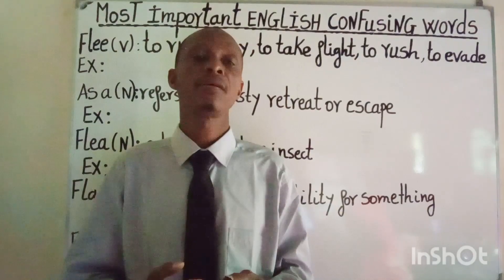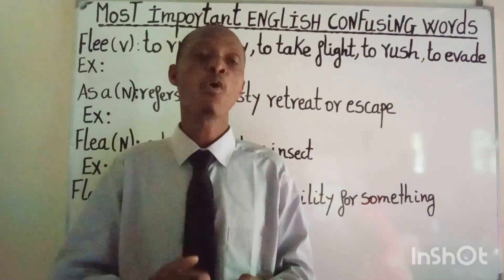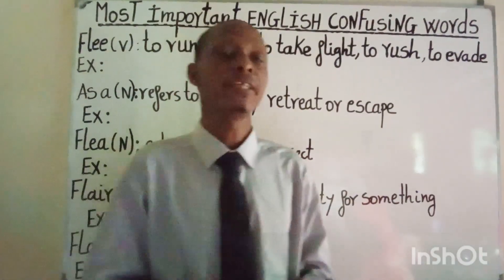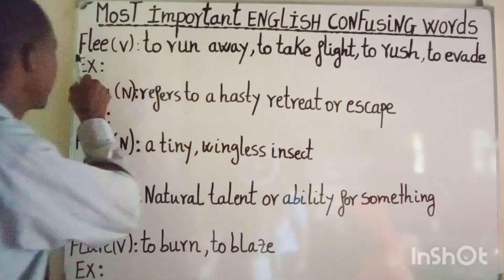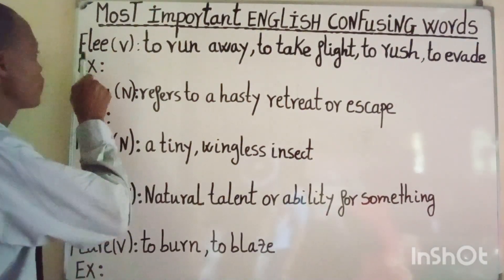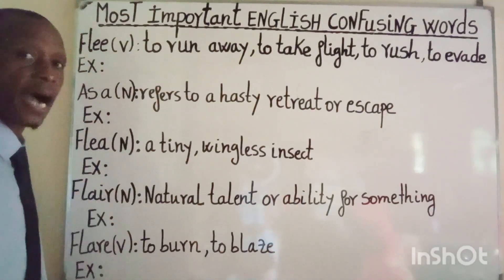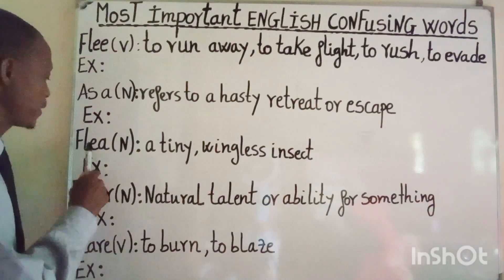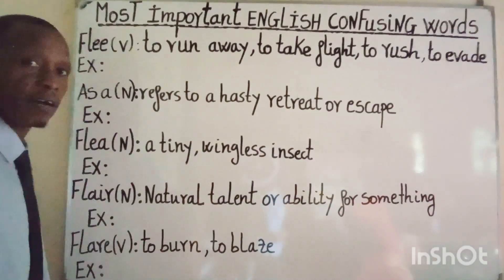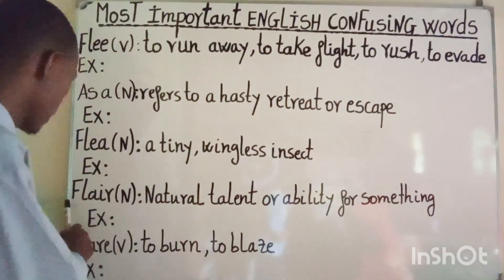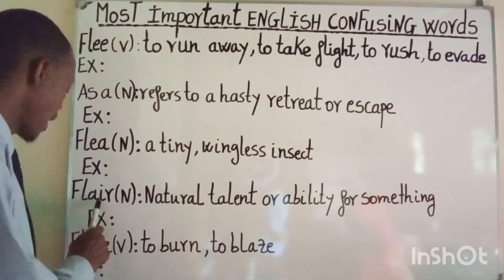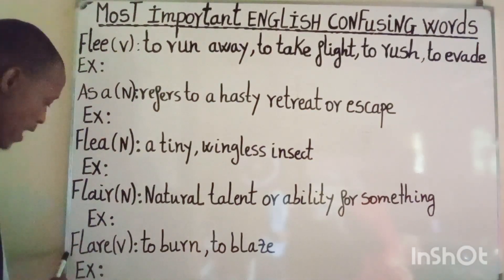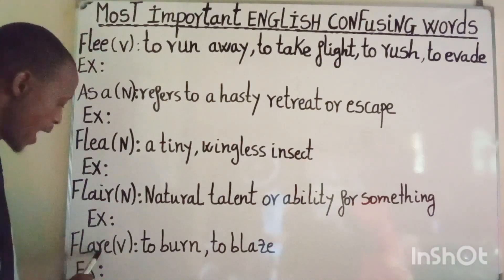In this lesson, I'm going to talk about the most important English confusing words, especially the word 'flee' when spelled as F-L-E-E, and 'flea' when spelled as F-L-E-A, as well as 'flair' when spelled as F-L-A-I-R, and 'flare' when spelled as F-L-A-R-E.